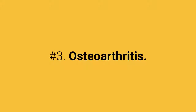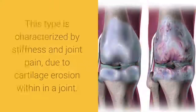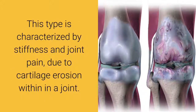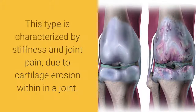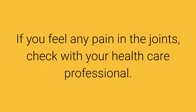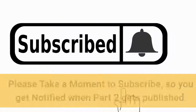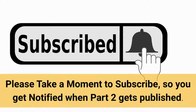Number 3: Osteoarthritis, often called 'wear and tear arthritis.' This type is characterized by stiffness and joint pain due to cartilage erosion within a joint. It commonly affects the hips, hands, spine, and knees in menopausal women and the elderly. If you feel any pain in the joints, check with your healthcare professional. Thanks for watching Part 1 — please take a moment to subscribe so you get notified when Part 2 gets published.